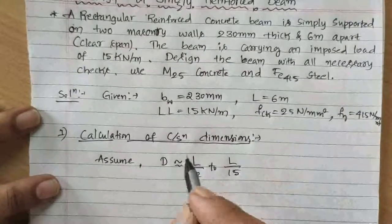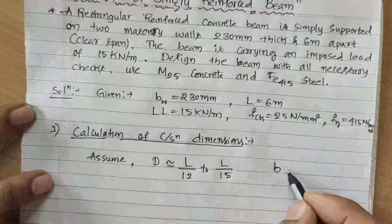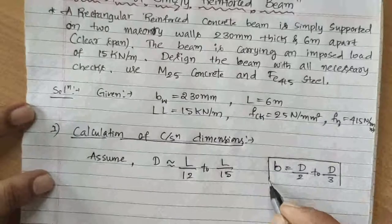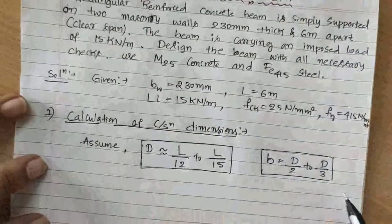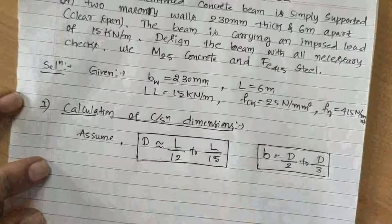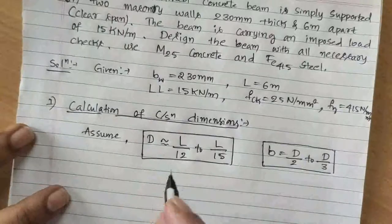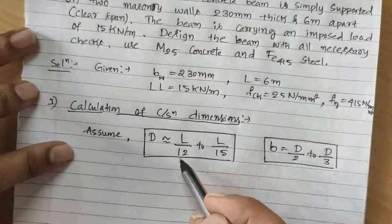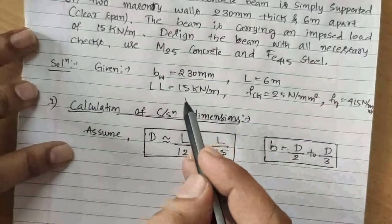Since the live load is 15 kN/m, which is relatively high, we take D = L/12. If the load were 5 or 10 kN/m, we would use L/15 or L/14. Width b is assumed as D/2 to D/3. We take D = L/12 because the load is more.